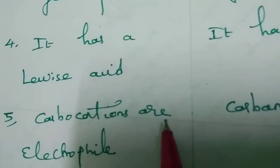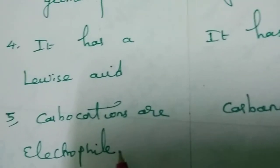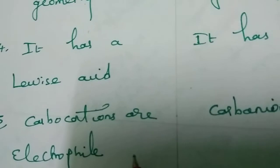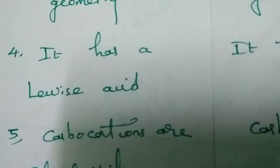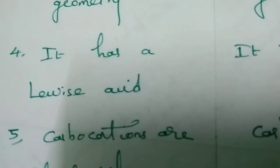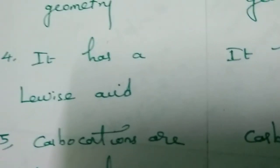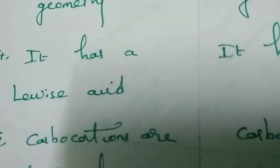Carbocations are electrophilic in nature, whereas carbanions are nucleophilic in nature. This is very important for class 11 and class 12 students. Kindly note it and share with your friends.